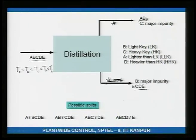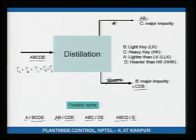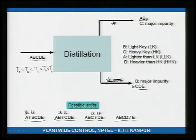There can be any number of splits. For example: A up the top with B, C, D, E down the bottoms; or A, B up the top with C, D, E down; or E alone at the bottoms with everything else at the top. By convention, the component just above the split line is called the light key, and the component just below is the heavy key.